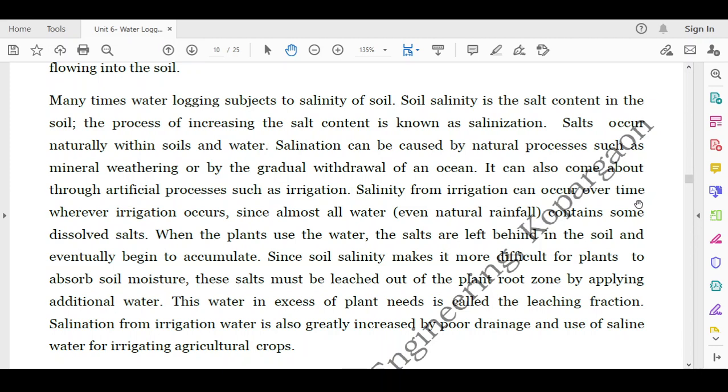Salination from irrigation water is also greatly increased by poor drainage and use of saline water for irrigating agricultural crops. So salinity of any soil increases with respect to time due to other prevailing conditions such as if the water is stagnant for more number of days, more duration, and if excess water is being supplied to the plants. Then plants will try to extract only water and whichever salts are present in the soil, they will remain as the residue into the soil. And in due course of time, these salts accumulate over the period of time and soil gets saline.